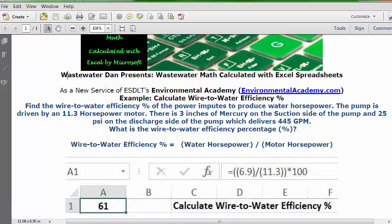In cell A1, format it as numbers with zero decimals, and set it as bold and centered. Then go to the formula bar and type this formula: equals open parenthesis 6.9 closed parenthesis division open parenthesis 11.3 closed parenthesis multiplication 100. Then press enter or the return key.